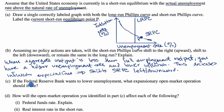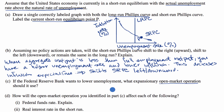Part C: if the Federal Reserve Bank wants to lower unemployment, what expansionary open market operation should it use? The Fed wants to inject more money into the economy — increase the amount of reserves in banks, which will increase the money supply. To do that, they will go out into the open market and buy bonds. When they buy bonds, the sellers deposit those Federal Reserve notes in banks, increasing bank reserves. Banks will be able to lend more and the money supply will increase.